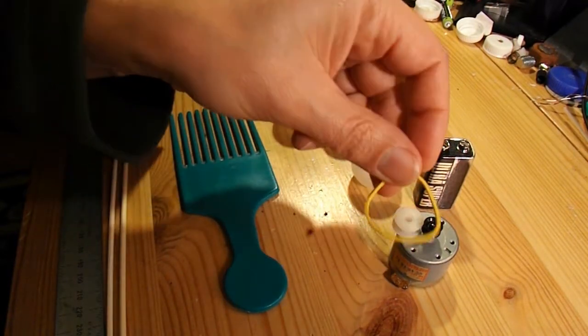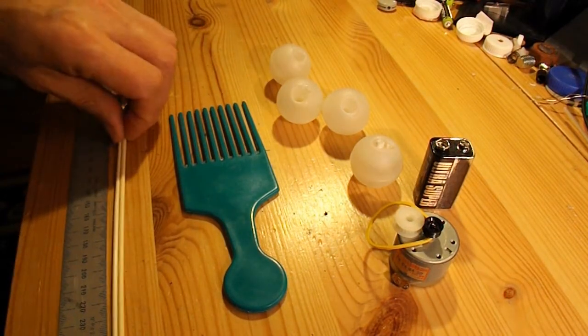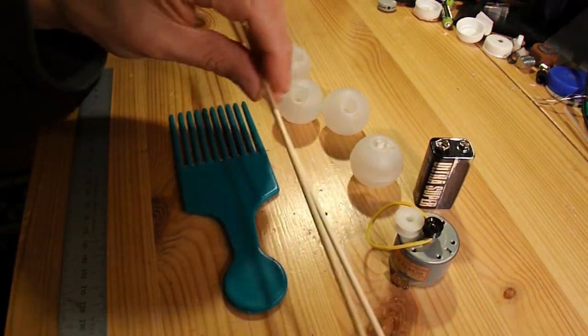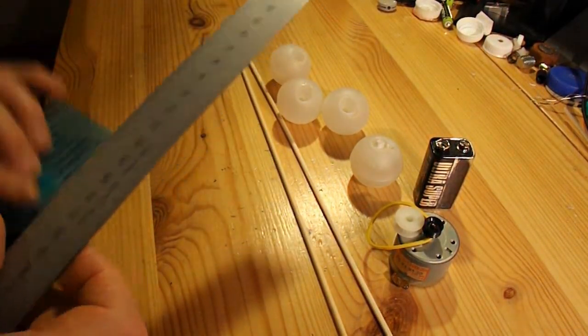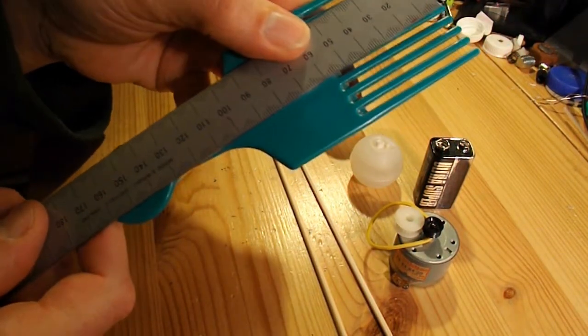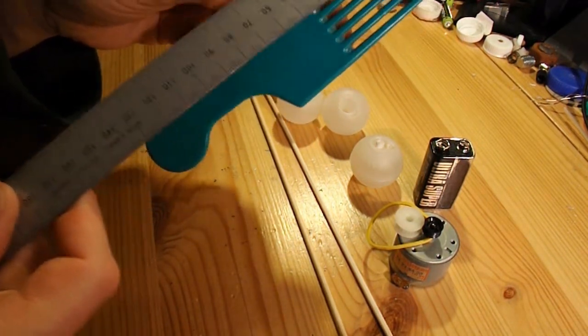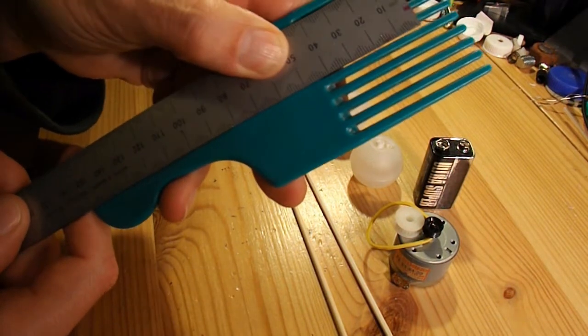Rubber band to connect the pulley to the pulley. A couple of BBQ skewers for the axles. And that's about it. I did notice that when I measured this comb, it is actually a bit too long.